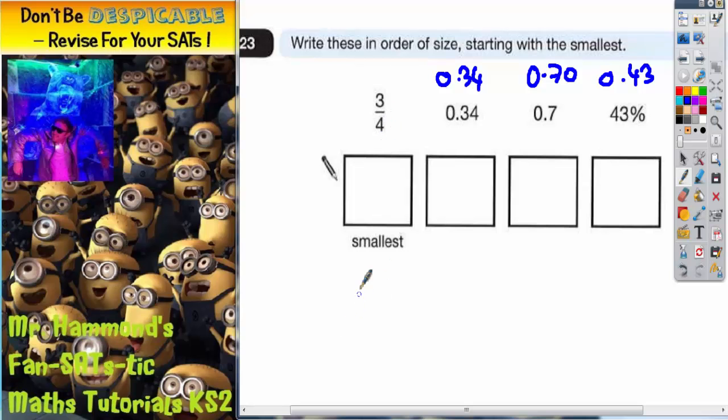The only other one is three quarters. Well, remember your pizza - if you've got quarters, each one would be 0.25, and three quarters is three lots of 0.25, which is 0.75.